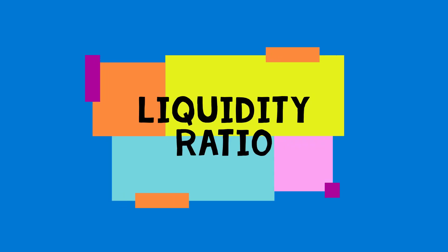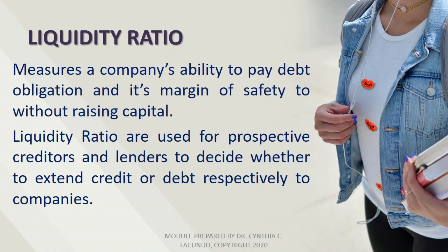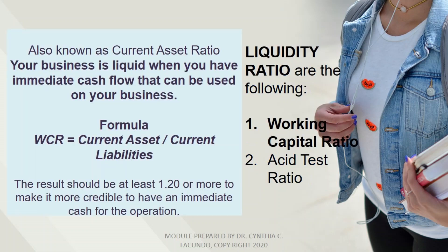Liquidity ratio measures a company's ability to pay debt obligations and its margin of safety without raising capital. Liquidity ratios are used by prospective creditors and lenders to decide whether to extend credit or debt to companies. There are two liquidity ratios: the first one is the working capital ratio, and the second one is the acid test ratio.